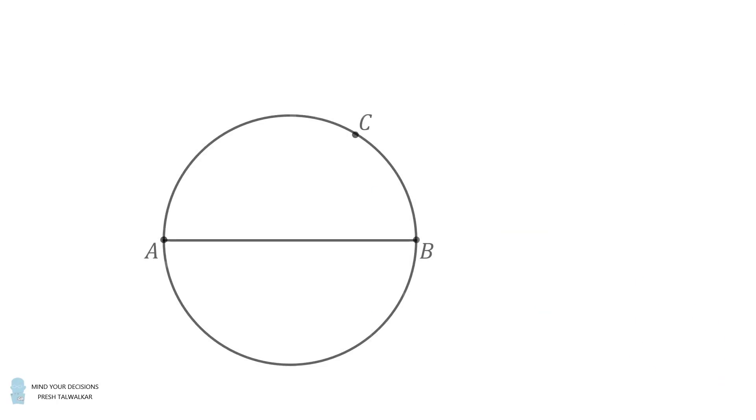So here's the remarkable construction. First we will connect BC and CA. Then angle BCA is an inscribed angle in a semicircle, which means angle BCA is a 90 degree right angle.